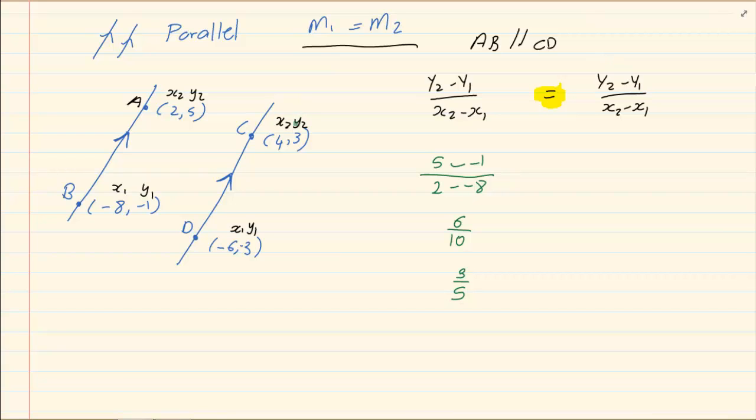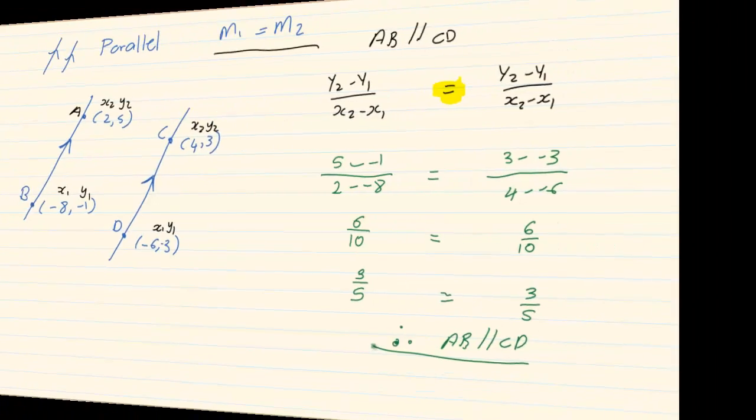Now let's work with CD. We've got 3 minus minus 3 over 4 minus minus 6 giving us 6 over 10 in its simplest form 3 over 5. Now, since they are equal we can say AB is parallel to CD. If they were not equal then they are not parallel.